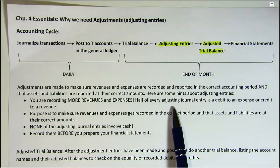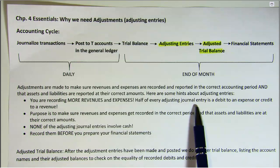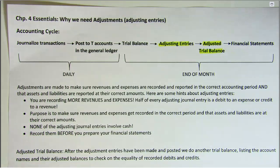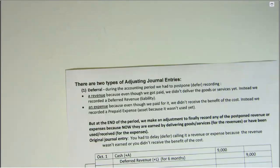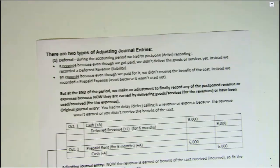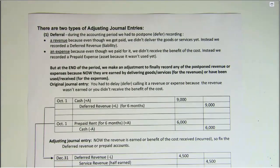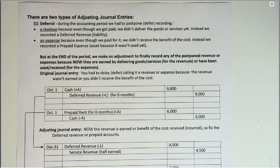Half of every adjusting entry will either be a debit to an expense account or a credit to a revenue, and the other half will depend on the type of adjusting entry it is. There are two types of adjusting journal entries: deferrals and accruals.